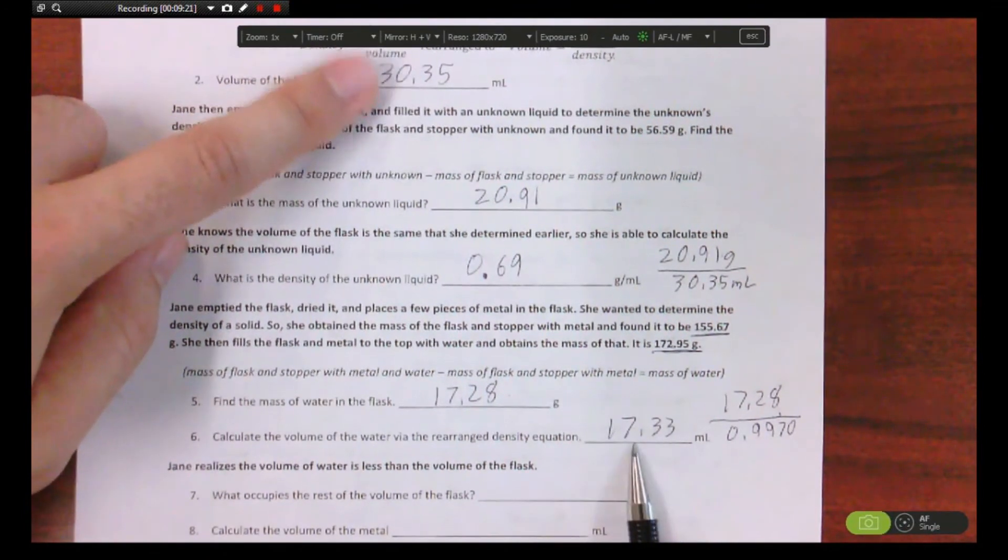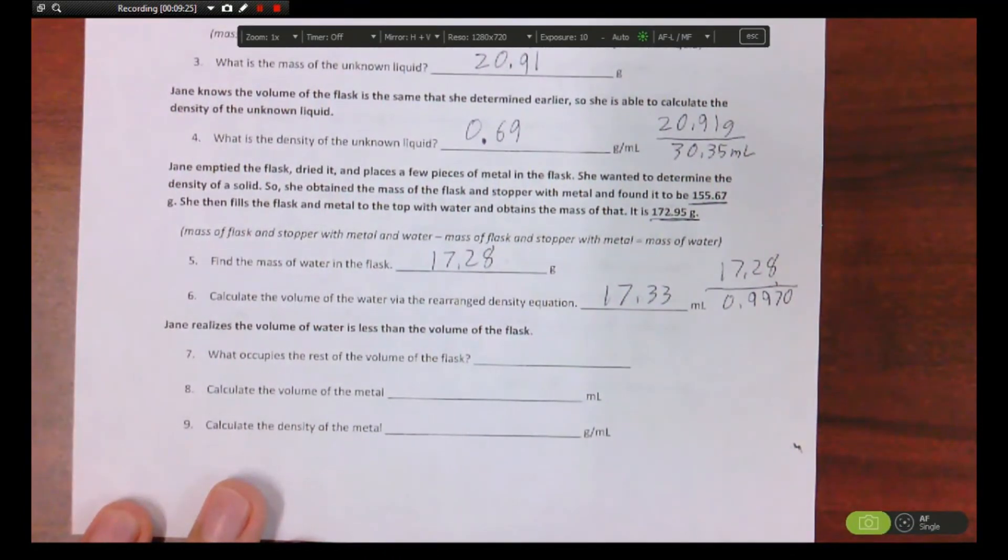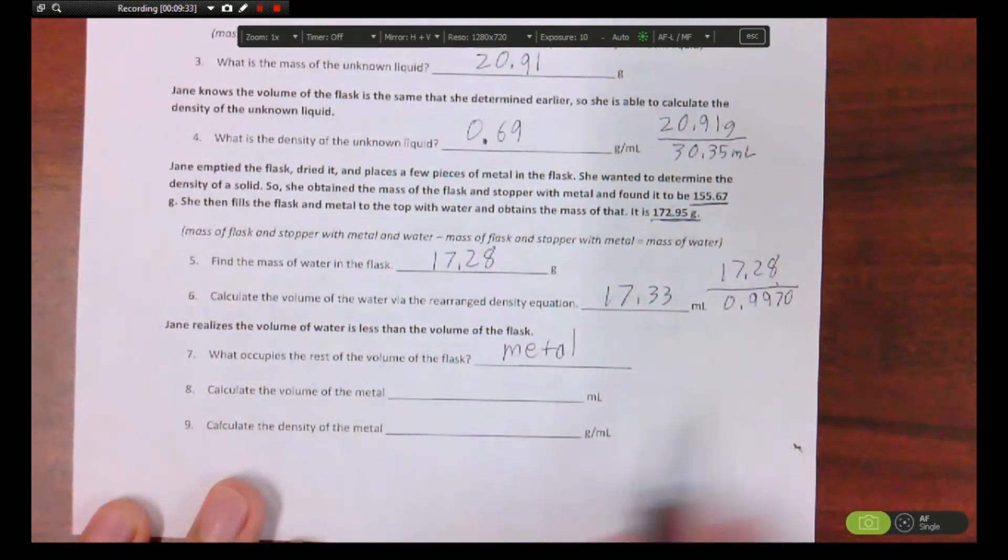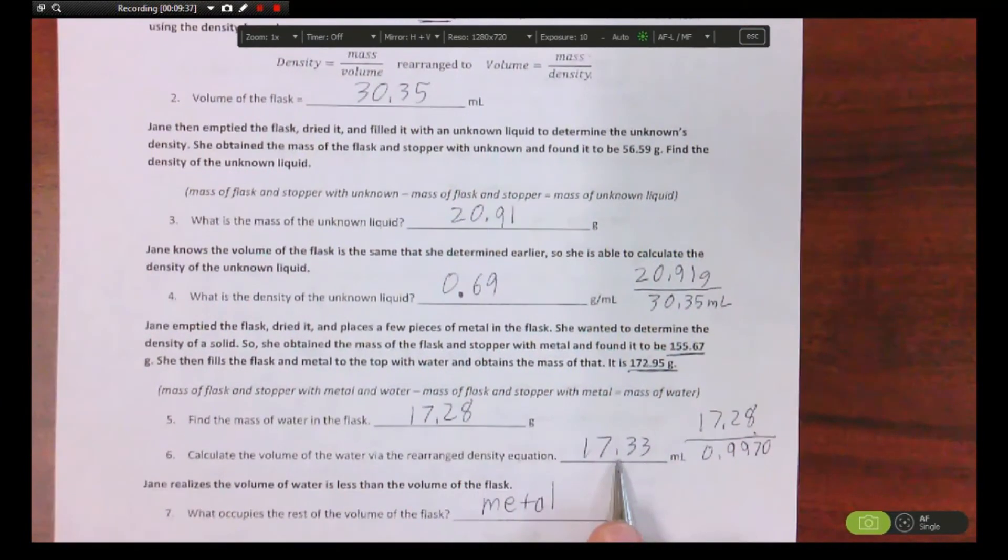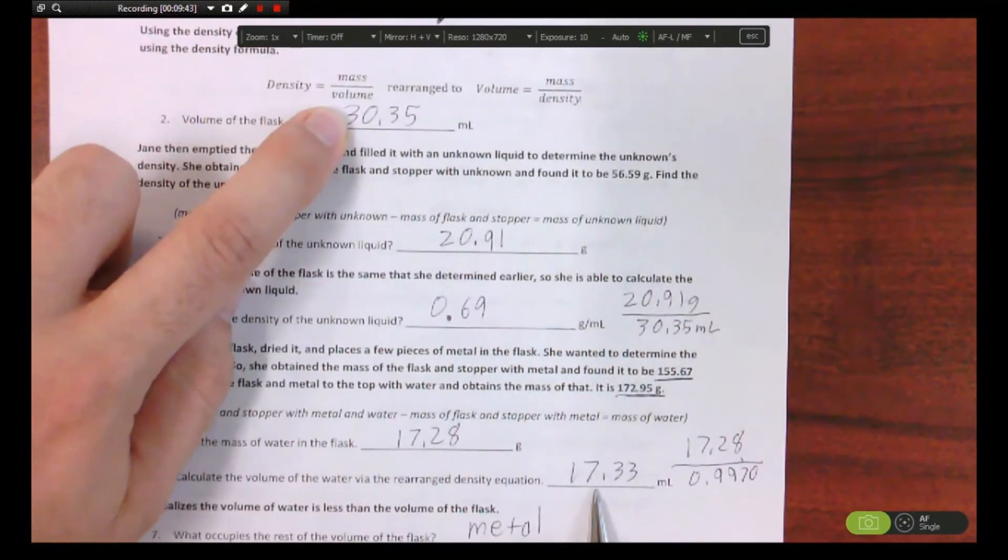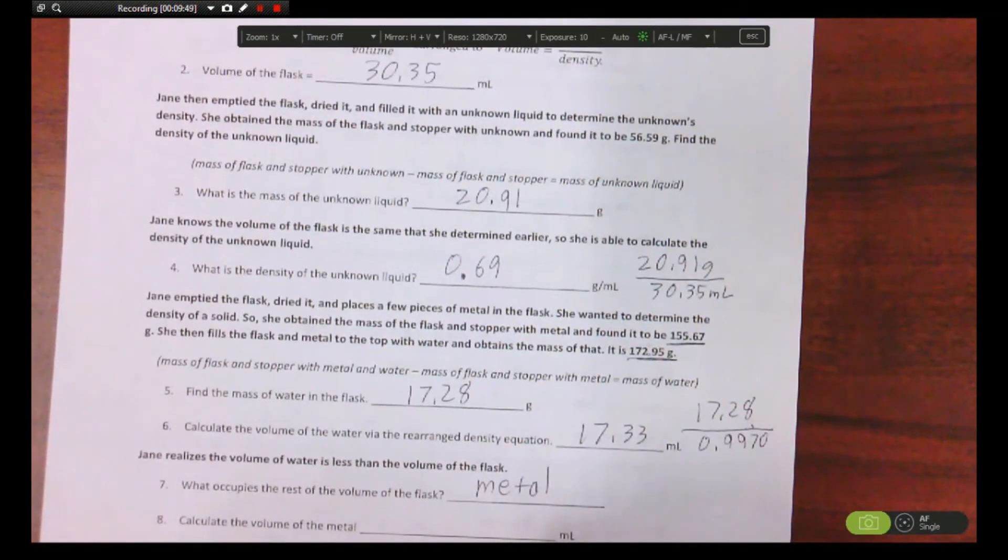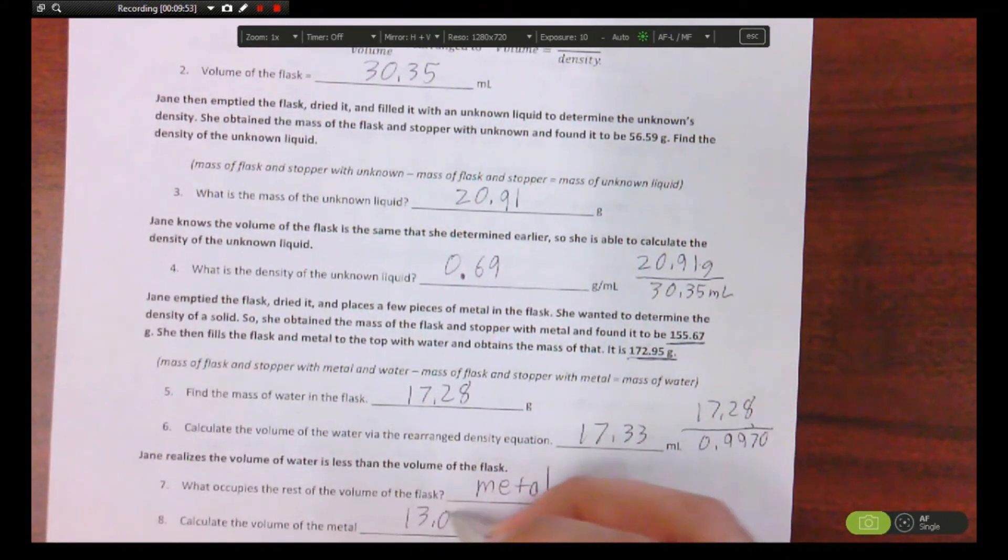There you go, you subtract. So she asked right here, what occupies the rest of the volume of the flask? Well, the only other thing in there besides water is the metal. And it says calculate the volume of the metal, just like I said. This is the displaced volume, which should be less because you put the metal in there. This is without metal. When you subtract the two, you get the volume of the metal, just like number four on your homework but it was a little bit backwards. So what'd you get? 13.02 milliliters.